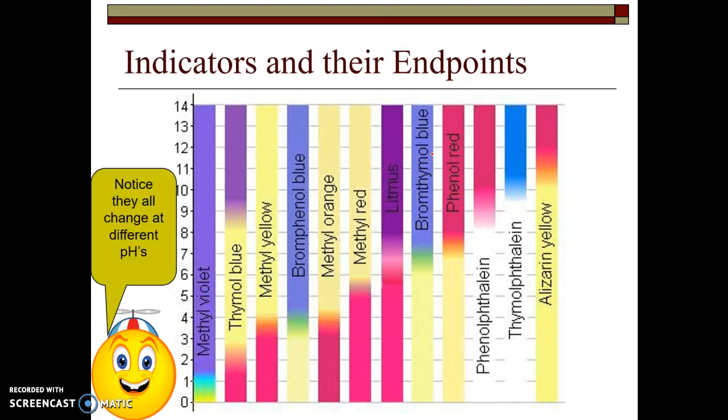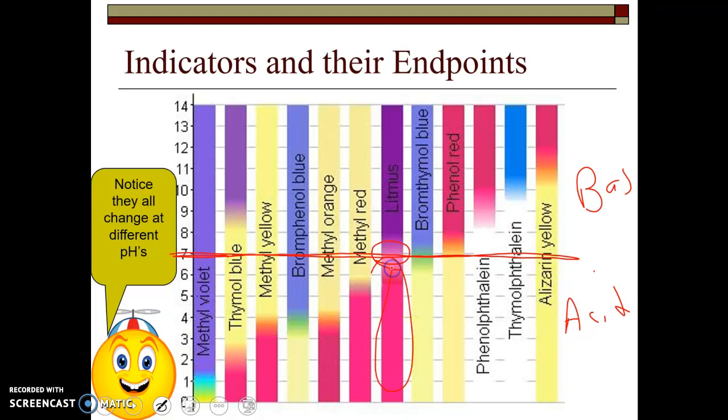Now, an interesting thing I want you to notice from this chart is that it's not like these indicators are all one color in acids and different colors in bases. Notice, again, 7 is the cutoff point, so this is neutral, so everything on the top half above 7 is a base, and everything below 7 is acids. So notice that litmus is very interesting because it does change right at that point. It will be red if it's in an acidic solution, and blue if it's in a basic solution.